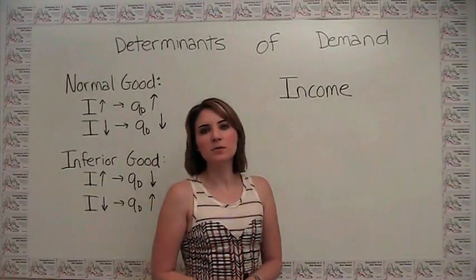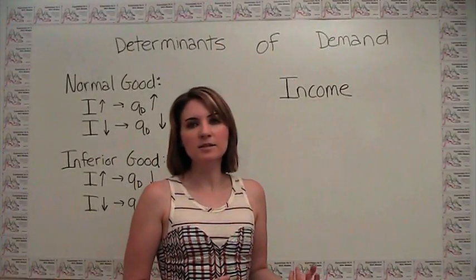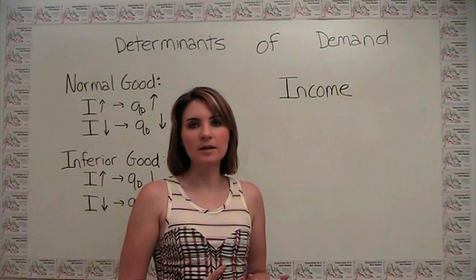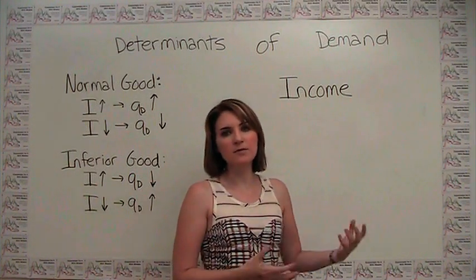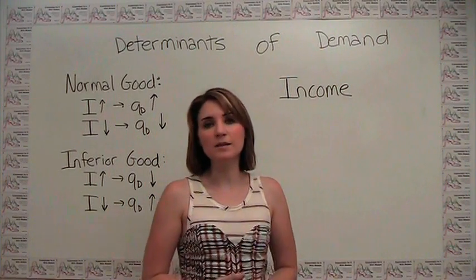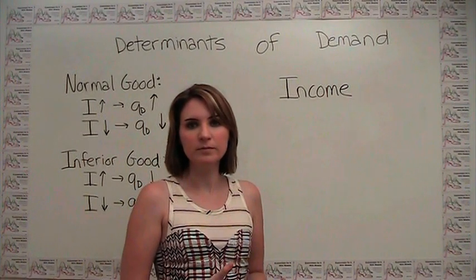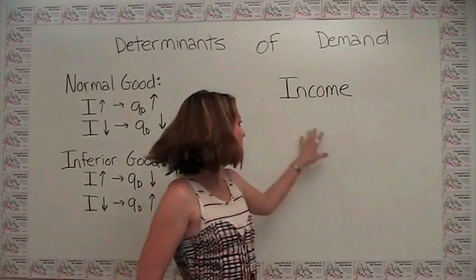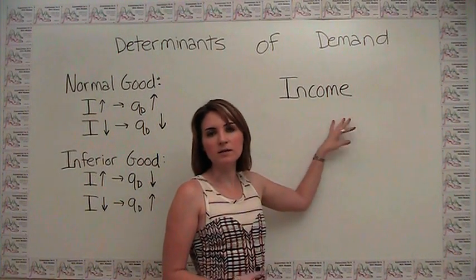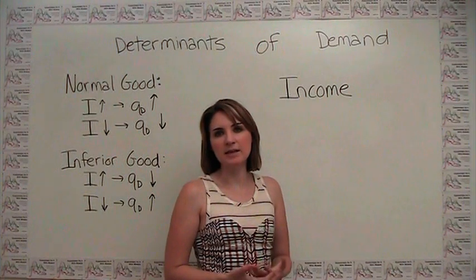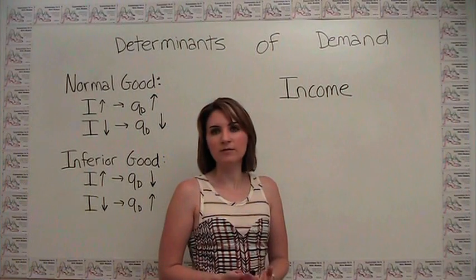The second determinant of demand is the consumer's income. Technically, in addition to referring to current income, we're also referring to level of wealth, because the amount of money somebody has in the bank will also affect his or her consumption patterns. The question is: what happens to quantity demanded when the consumer experiences an increase or decrease in income? The answer is that it depends — we need more information.